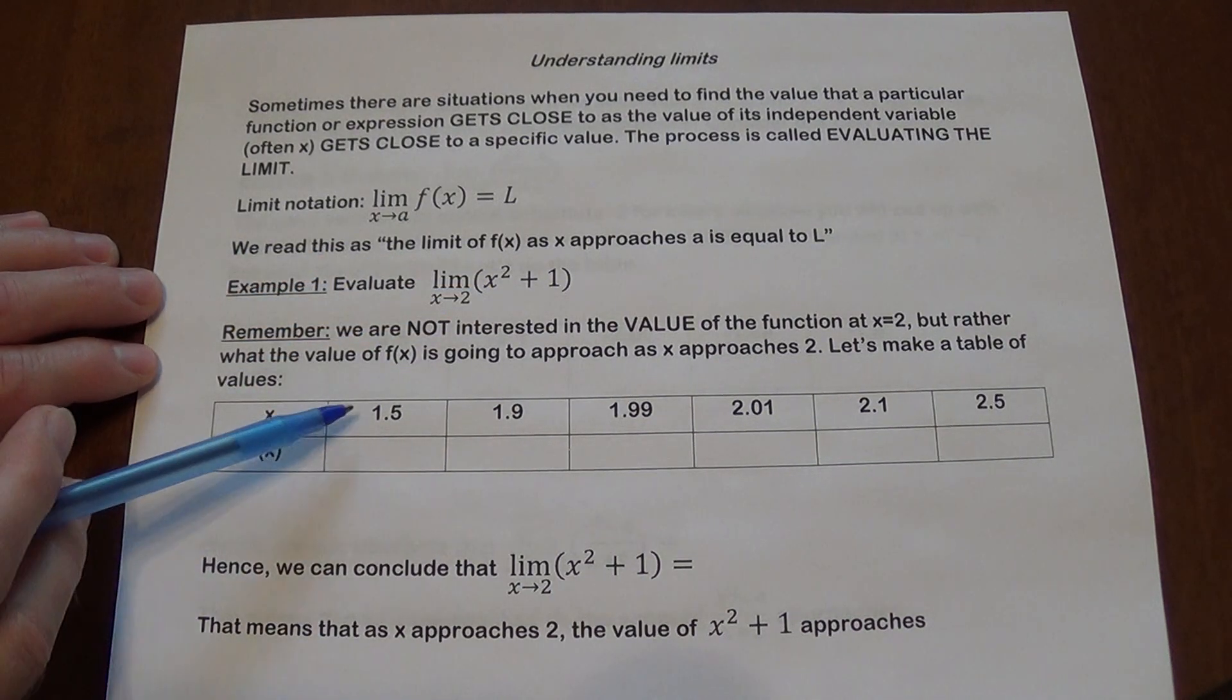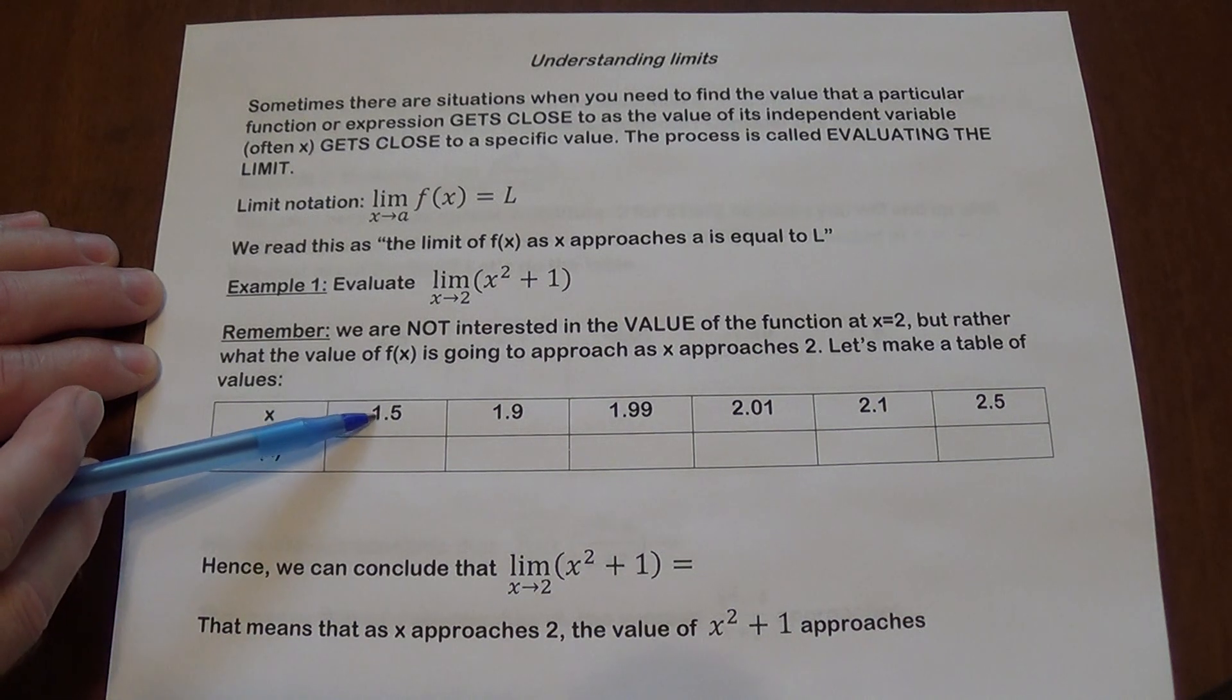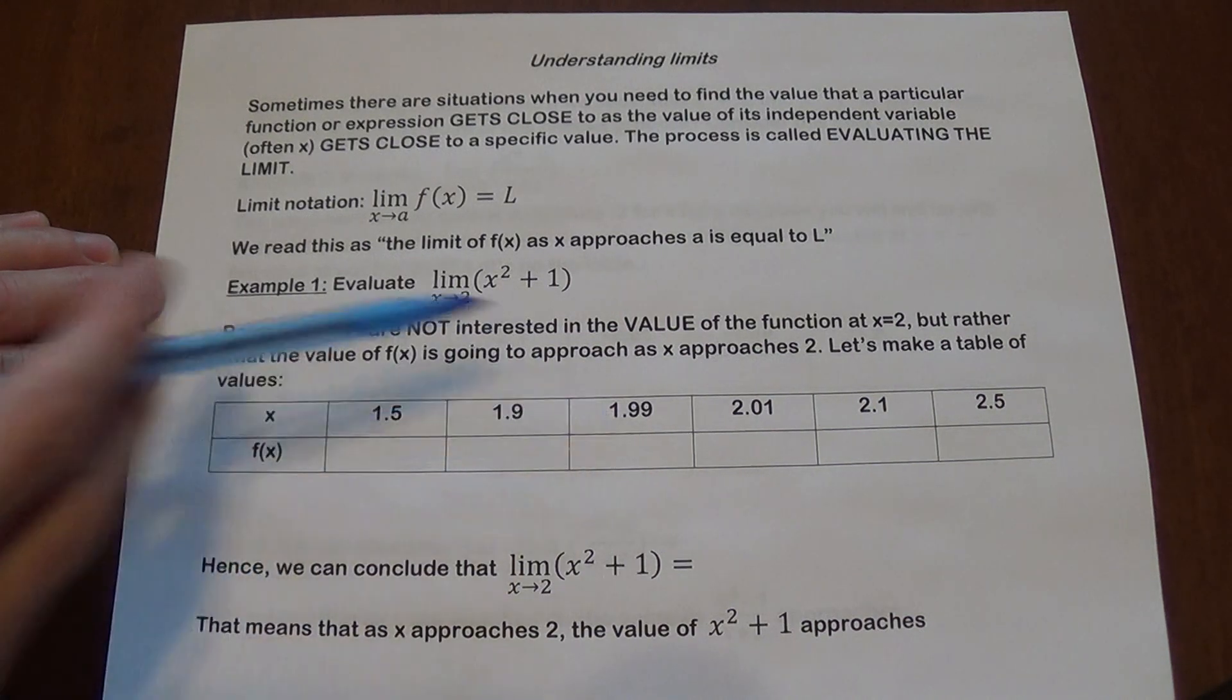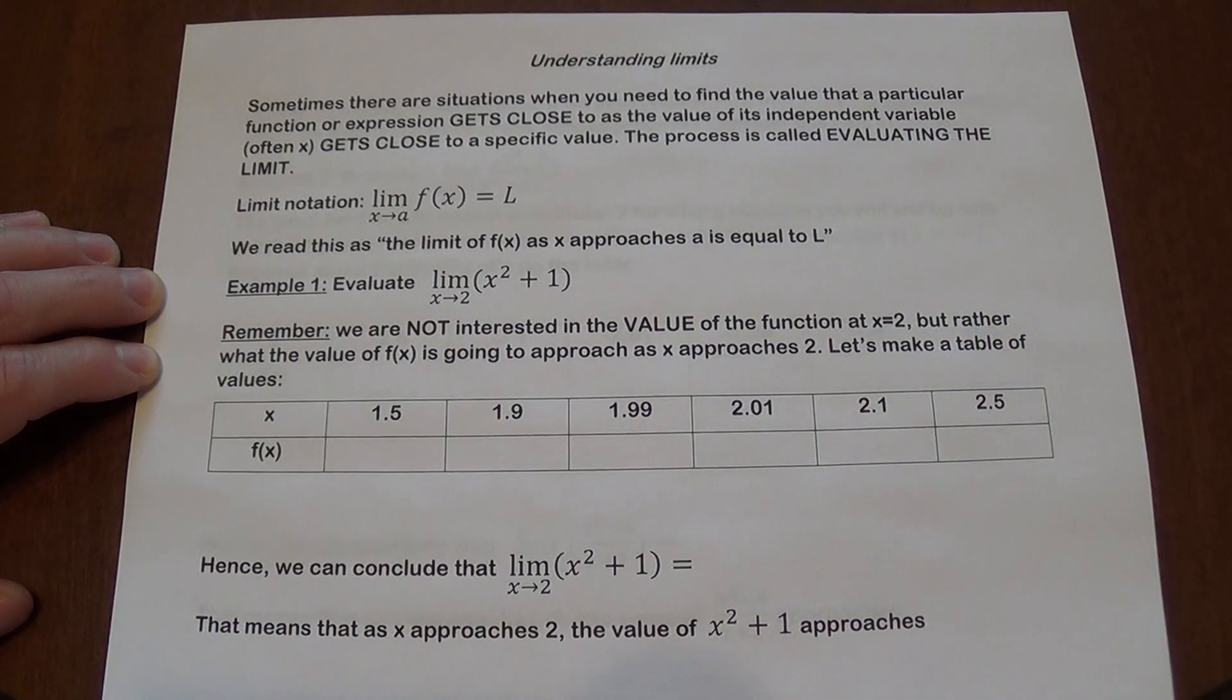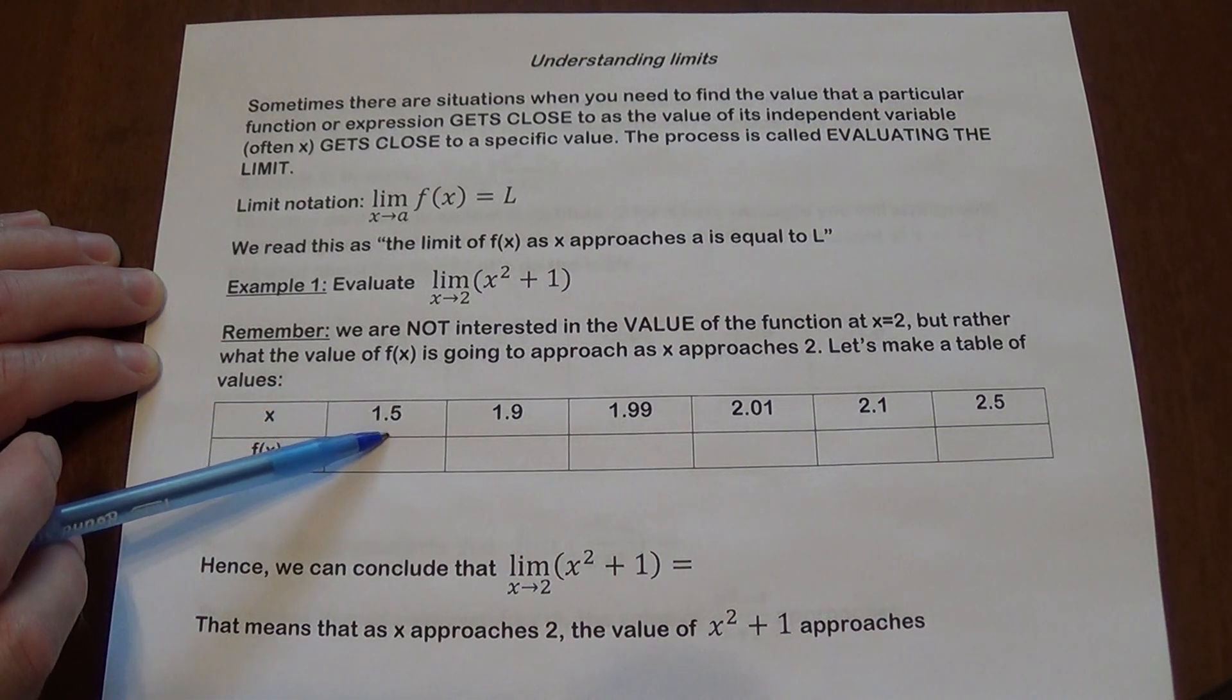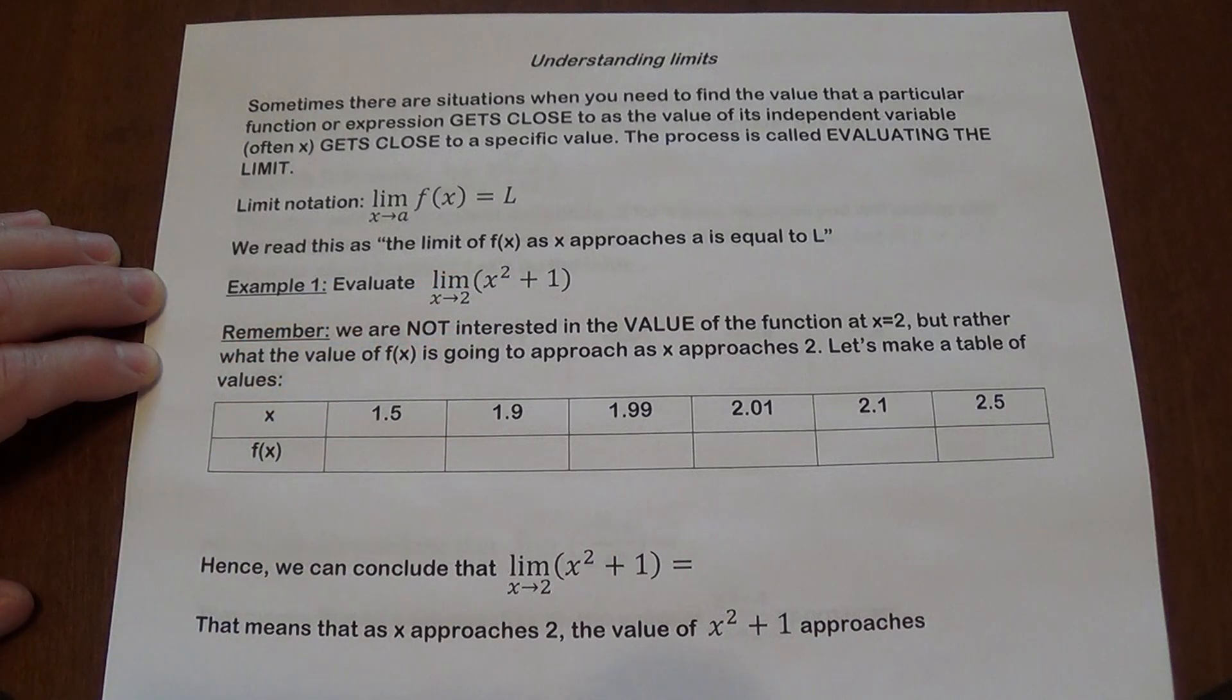So I made a table of values. We have these numbers. So here I'm approaching 2 from the left and here I'm approaching 2 from the right. Please note I do not get to a value of 2. So what we do here is we simply take each one of these numbers, substitute that into x squared plus 1 and we calculate what we get.